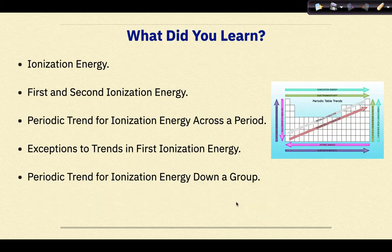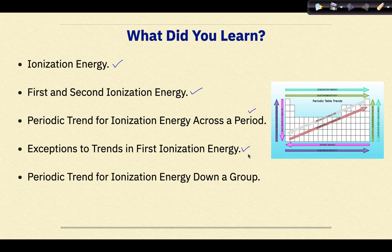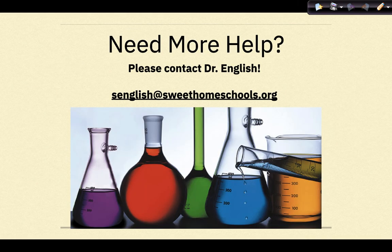So what did you learn? We talked about the definition of ionization energy, looked at the difference between first and second ionization energy, looked at the periodic trend for ionization energy across the period, looked at exceptions to trends in first ionization energy, and wrapped it up with the periodic trend for ionization energy down a group. Need more help? Feel free to contact me. Have a great day.